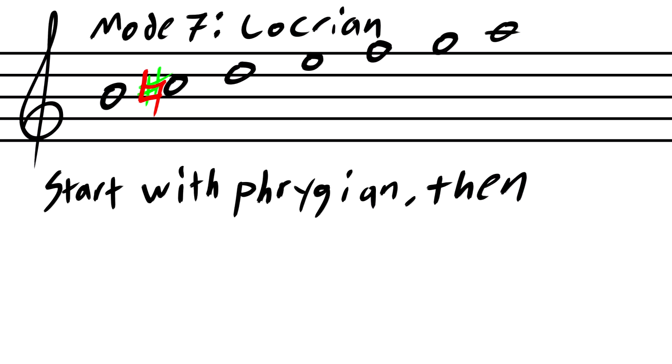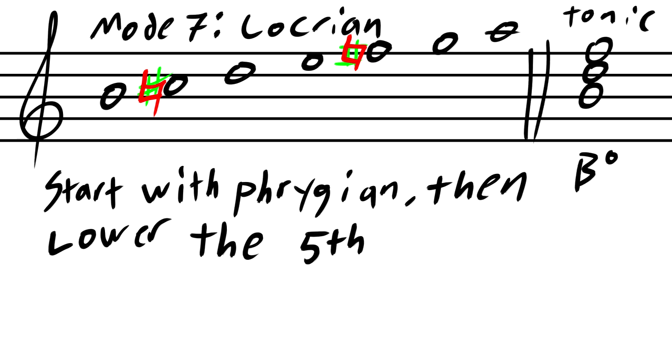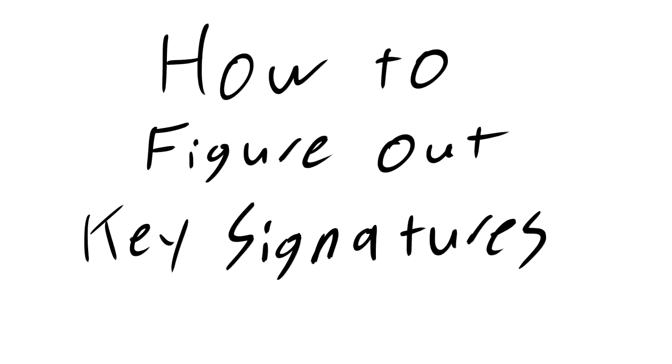Here's why. Take that cool unstable Phrygian mode and now lower the fifth. Now our tonic chord is a diminished chord. How am I supposed to feel satisfied if a piece ends on this? All right, that's enough about modes.